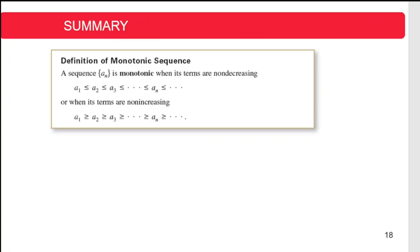In summary, a sequence is monotonic when its terms are non-decreasing or when its terms are non-increasing. That's all for today, thank you.